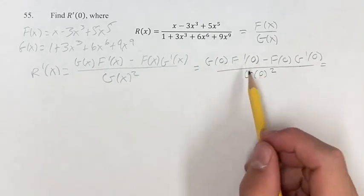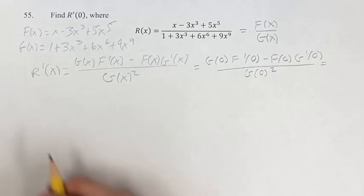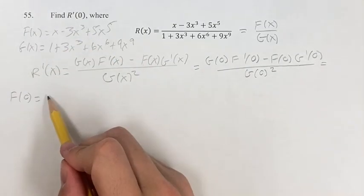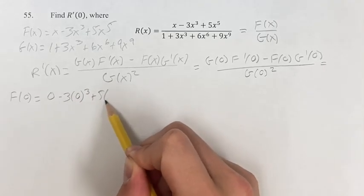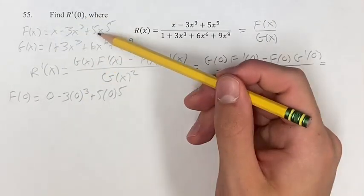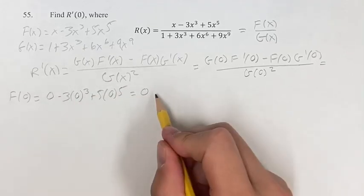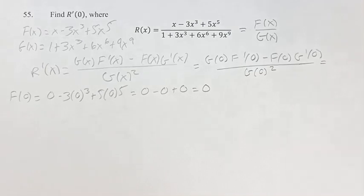Before we can continue with this, we actually have to find what f of 0 is, what g of 0 is, and so on. So f of 0 is equal to 0 minus 3 times 0 cubed plus 5 times 0 to the 5th. This is just by taking this and plugging in 0 for x. This gives us 0 minus 0 plus 0, so this is all just 0.